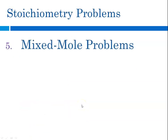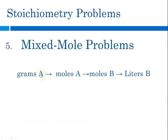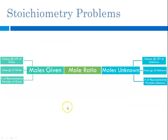By mixed mole problem, what I mean is that you might be given mass and asked for liters, for instance, or you might be given liters and asked for particles. In general, this is really a study in the mole roadmap. Remembering the mole roadmap, you might be given liters, you might be given grams, or you might be given molecules or formula units. The first part is a mole roadmap problem — getting from volume, mass, or particles to moles of what you were given.